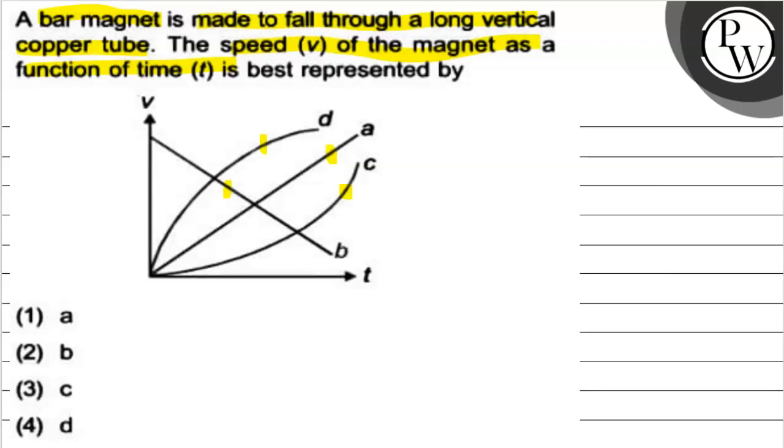In this question we are given a bar magnet which is falling through a long vertical copper tube with speed v. The speed of this magnet is varying with time according to some reasons. So we are given four curves in this question. We need to identify which curve best represents this speed variation.